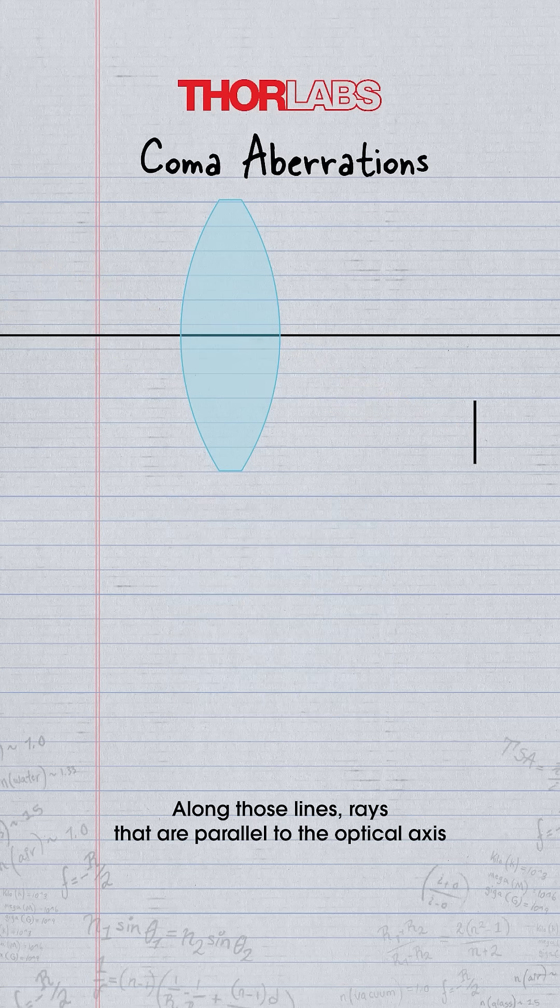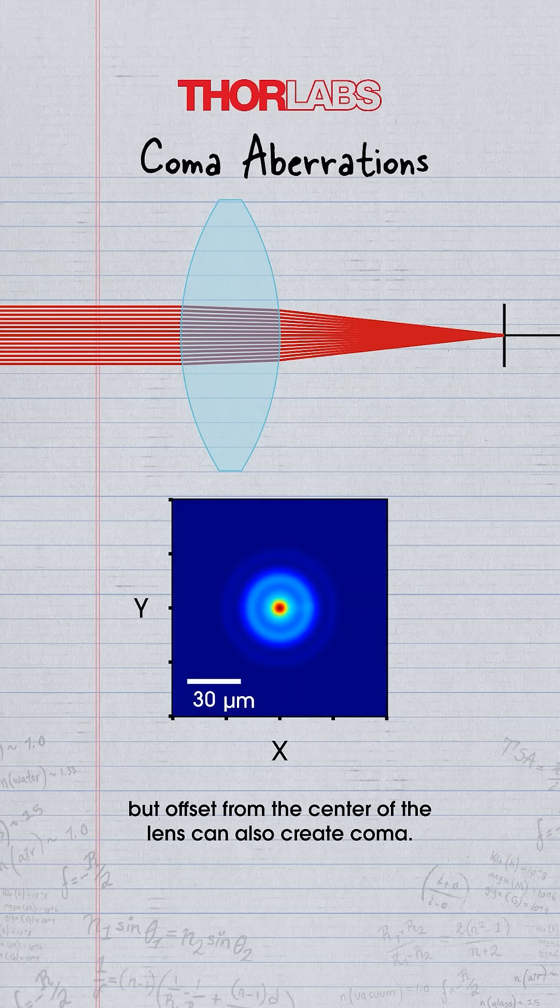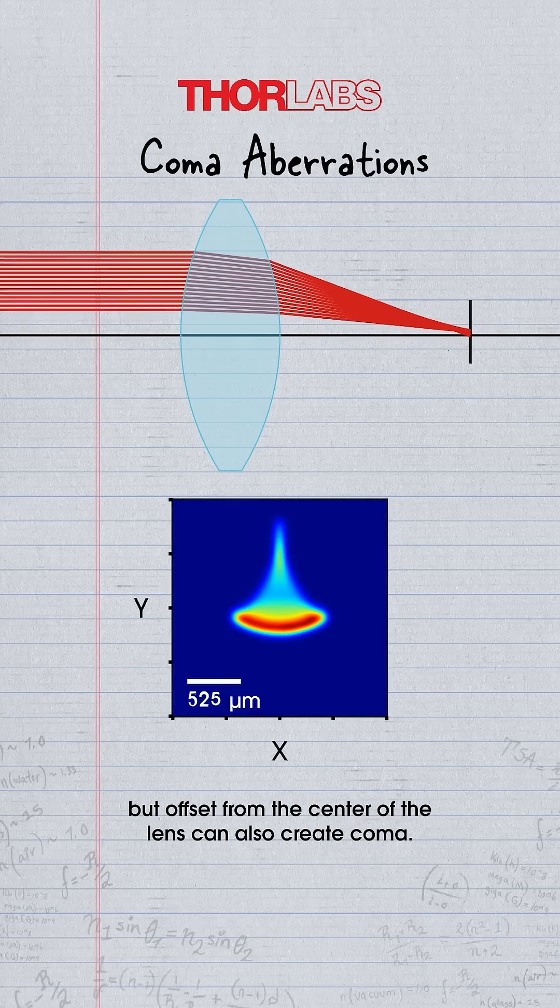Along those lines, rays that are parallel to the optical axis but offset from the center of the lens can also create coma.